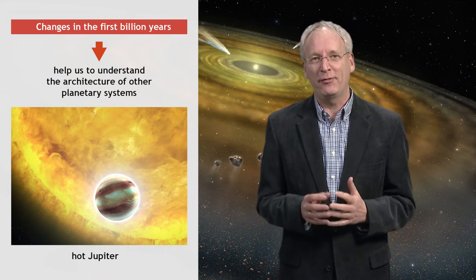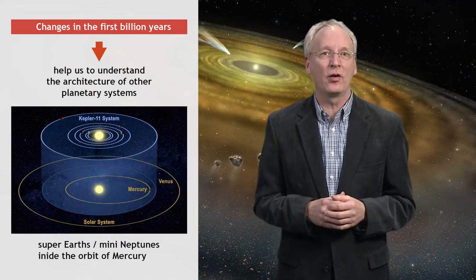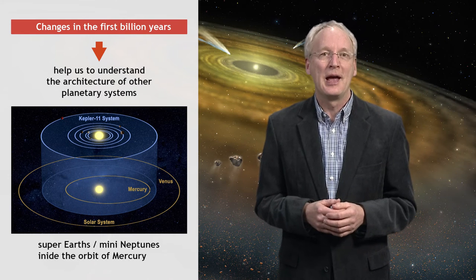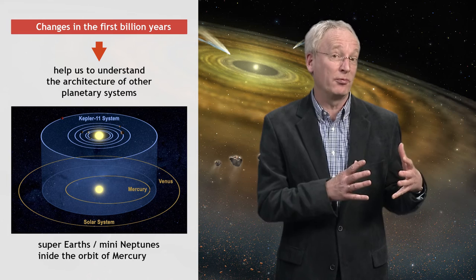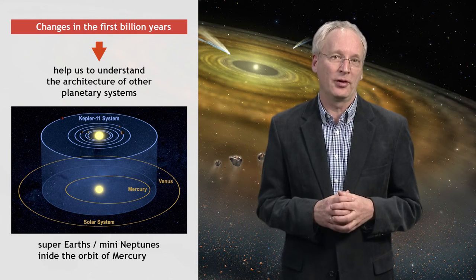Other systems might have five planets, each of them larger than the Earth, more like Neptune maybe, packed into a region that would completely fit inside the orbit of Mercury, the innermost planet in our own solar system.